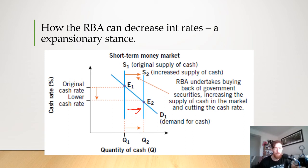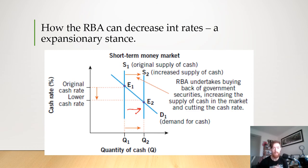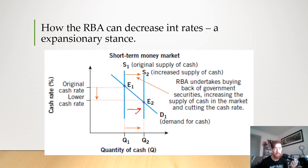Essentially, it's all about how the RBA tries to manipulate the cash rate by either buying or selling government securities to alter the level of cash available in the economy. If there is more cash available in the short-term money market, it decreases the cash rate because when more is available, it lowers the price. When the RBA sells government securities, it takes money out of the short-term money market and leads to a higher cash rate because there is less money available and therefore it's more valuable. More recently, the RBA has been buying back government securities to lower the cash rate to the current 0.25%.